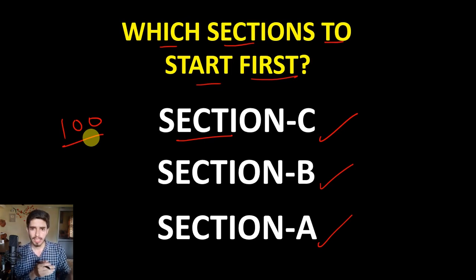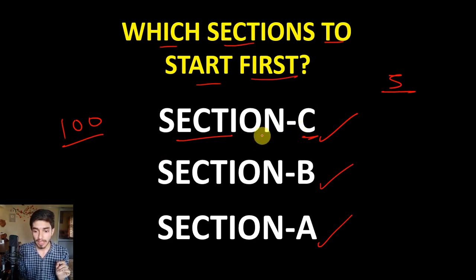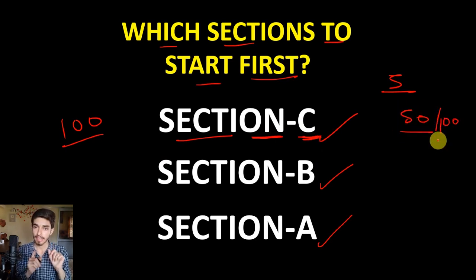The questions from nuclear physics, atomic and molecular physics - easy subjects like these - come in Section C. So you first have to attempt those easy questions with which you will score five marks with each question. Your first target is to complete Section C and score at least 50 marks out of 100 in this section.